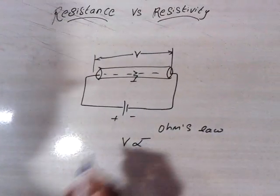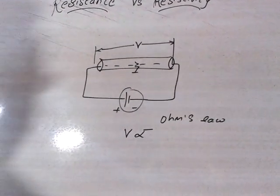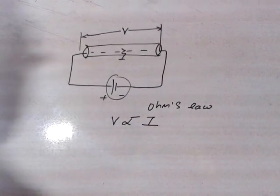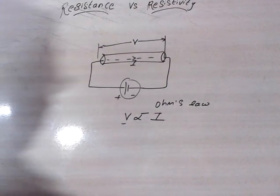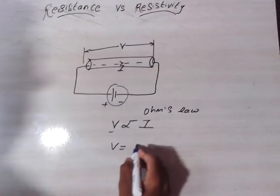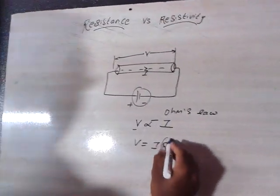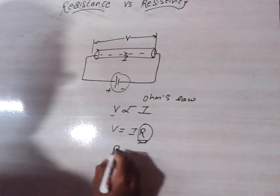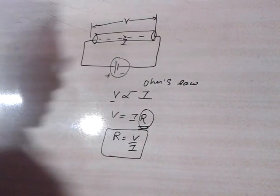As per Ohm's law, as you increase the potential difference — that is, as you increase the voltage of your battery — the current passing through this wire will also increase. That is, V is directly proportional to I. Now, if you remove the proportionality sign you need to put a constant, and that constant term is called resistance, capital R. So resistance R equals V upon I — that gives you the formula for resistance.